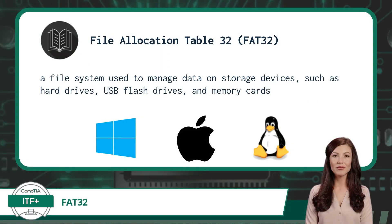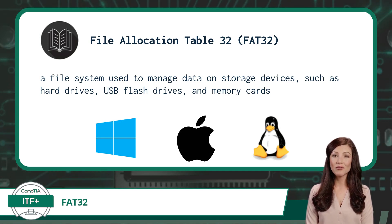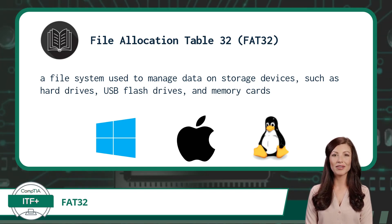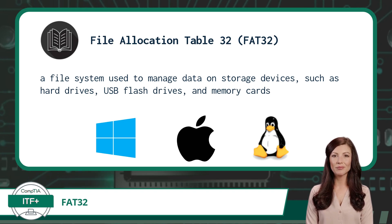FAT32 stands for File Allocation Table 32. It is a file system used to manage data on storage devices such as hard drives, USB flash drives, and memory cards. FAT32 is an older file system that has been widely supported across different operating systems, including Windows, macOS, and Linux.